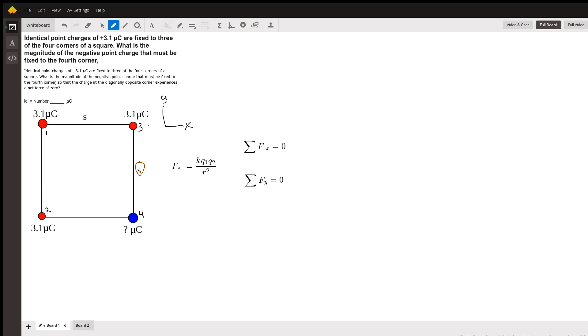Here we have our unknown charge 4, which will have to be negative, so I've given it a blue color. Recall that the electric force is given by k times the product of the two charges over the distance between those two charges squared: k*q1*q2/r^2.